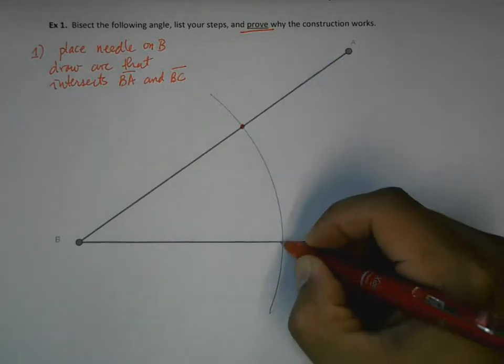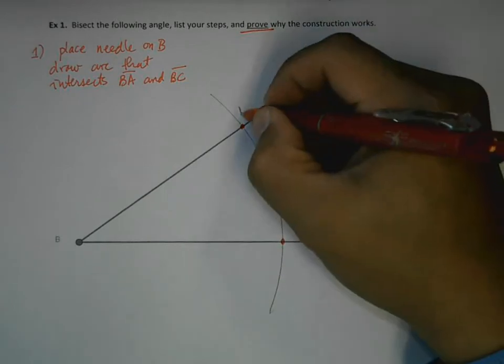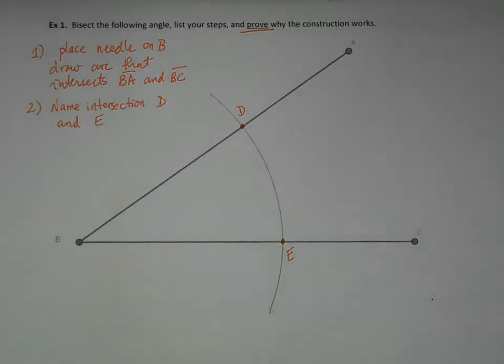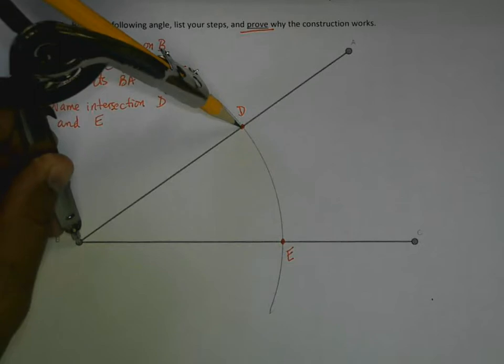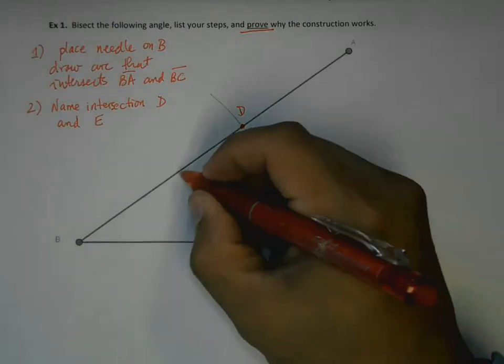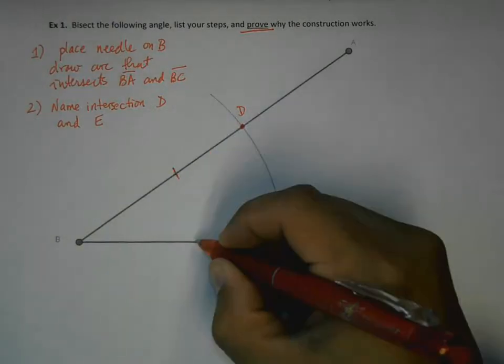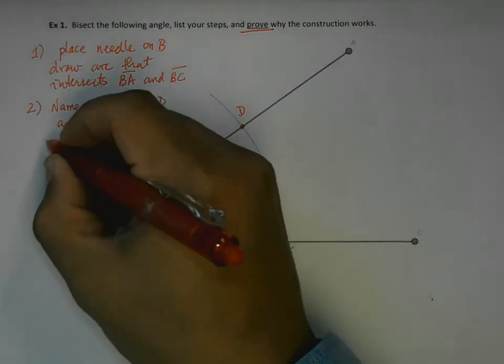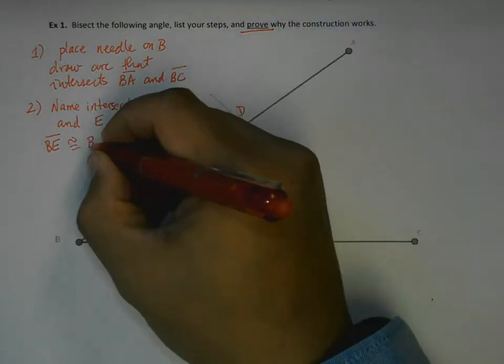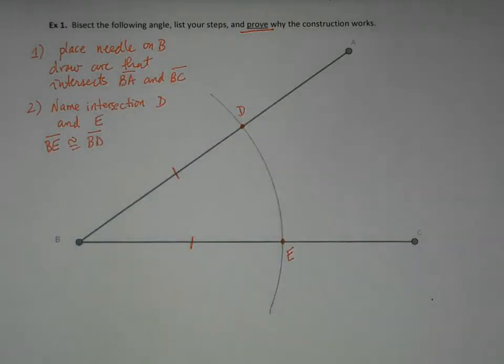Where those intersection points occur, let's call them D and E. It's worth noting too that by construction, and when I say by construction I mean because we made it that way, because we drew this arc this way, we know for a fact that BD must be congruent to BE. So that's very much worth noting. BE is congruent to BD by construction.